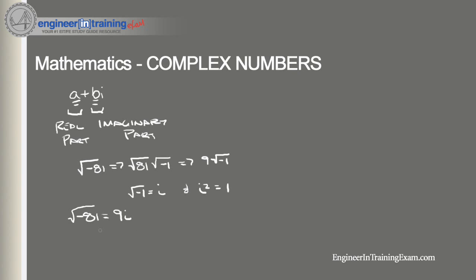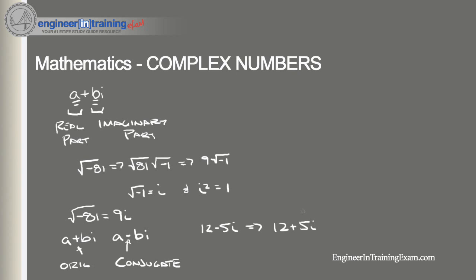Now, the conjugate of a complex number: say we're given a complex number A plus Bi — the conjugate is A minus Bi. In other words, it is the original complex number with the sign of the imaginary part changed. For example, if we have the complex number 12 minus 5i, the conjugate would simply be 12 plus 5i. Keep that in mind as we go through this review.